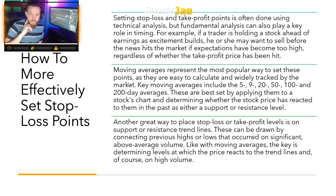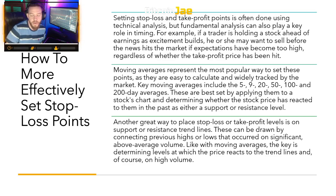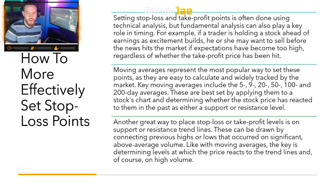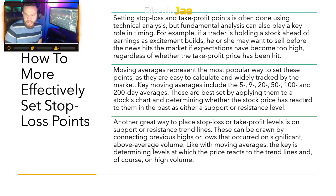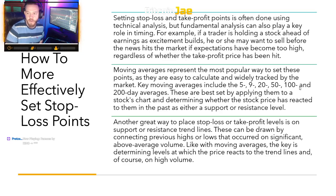Another great way to place a stop-loss or take-profit level is on support or resistance trend lines. These can be drawn by connecting previous highs or lows that occurred on significant, above-average volume. Just like with moving averages, the key is determining levels at which the price reacts to the trend lines on high volume. Anyone who has traded with us knows we use support and resistance lines together with moving averages to figure out our entries, stops, and take-profit points. These are very simple things to learn and there are many tutorials available.